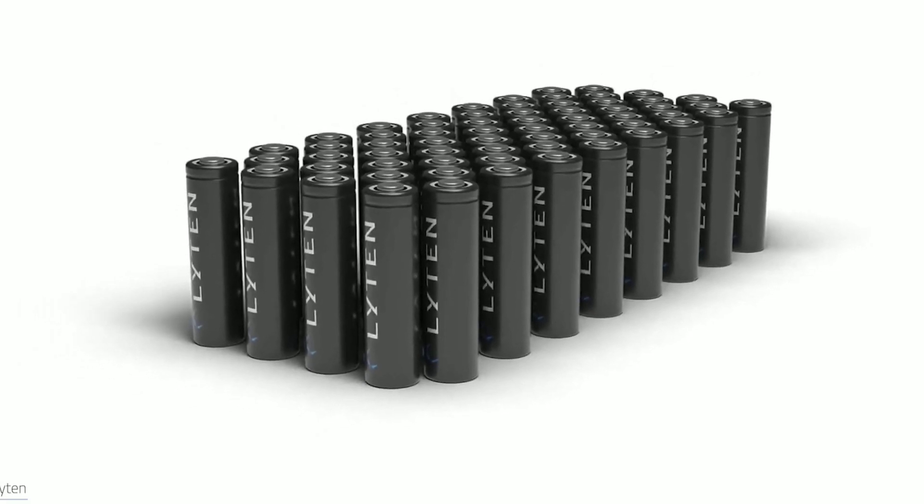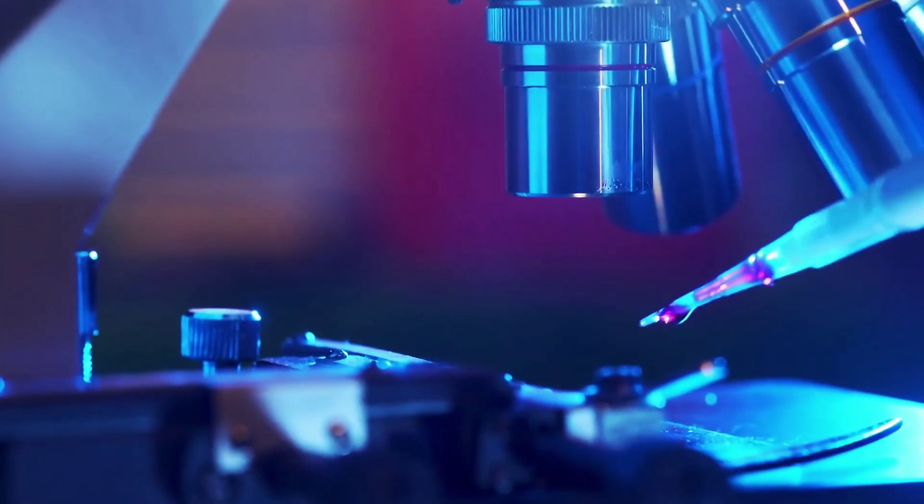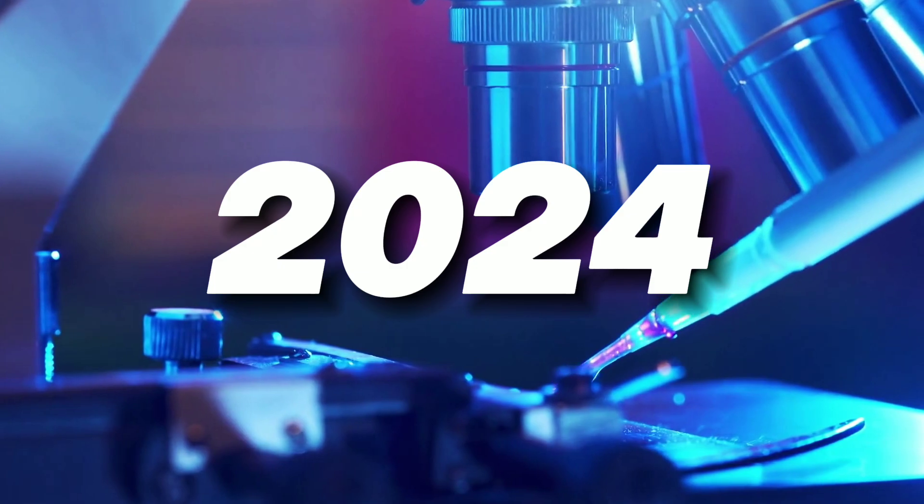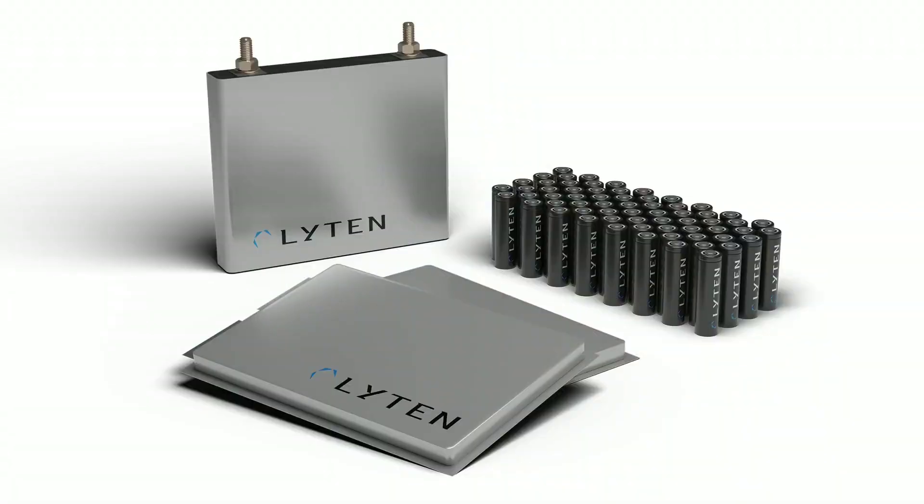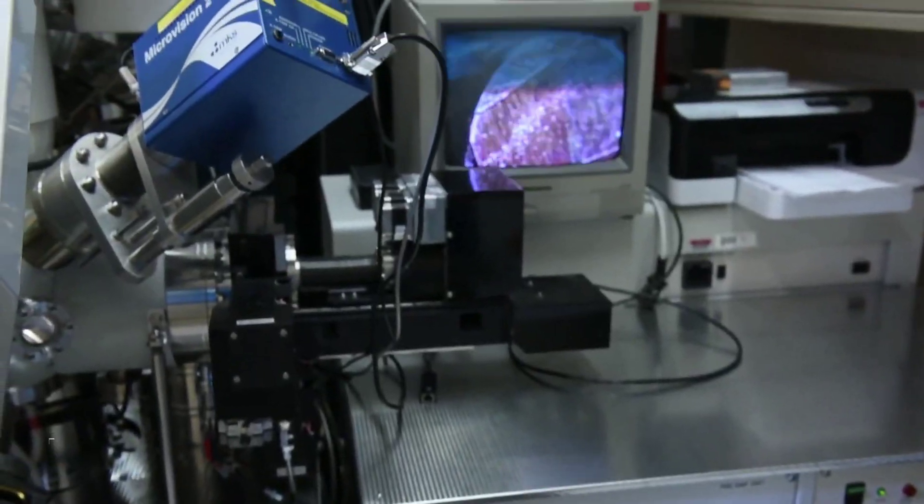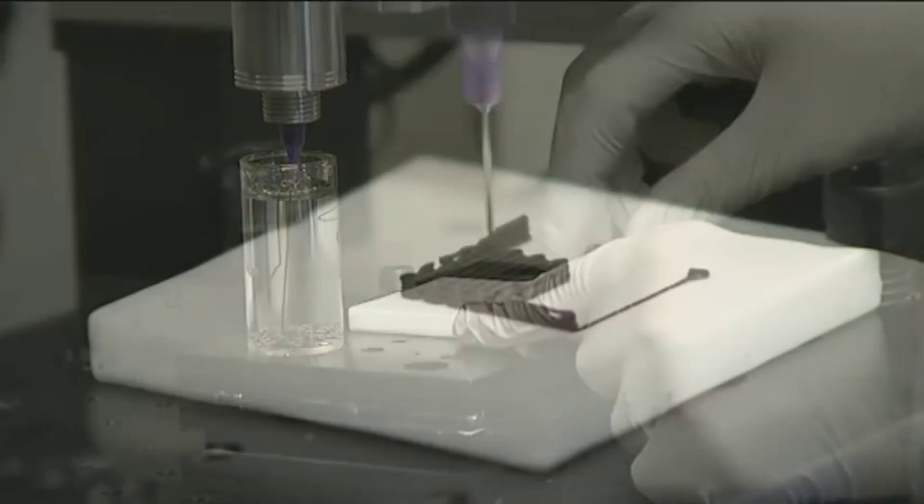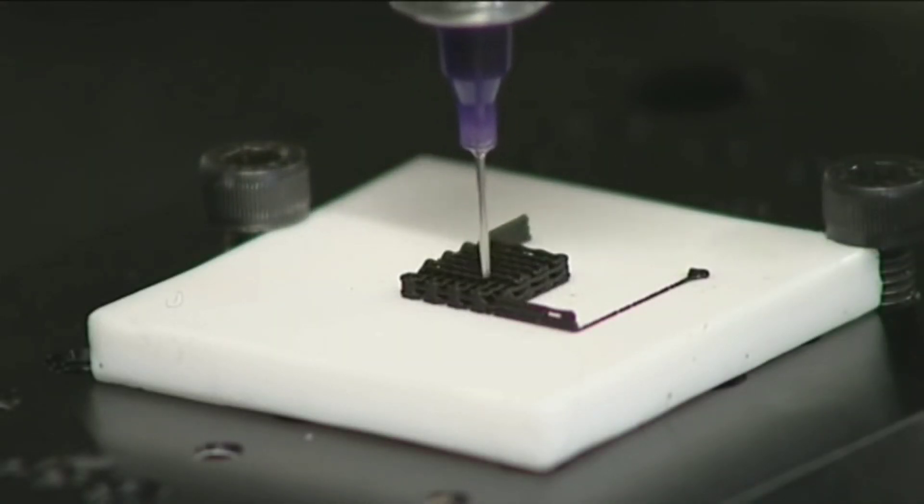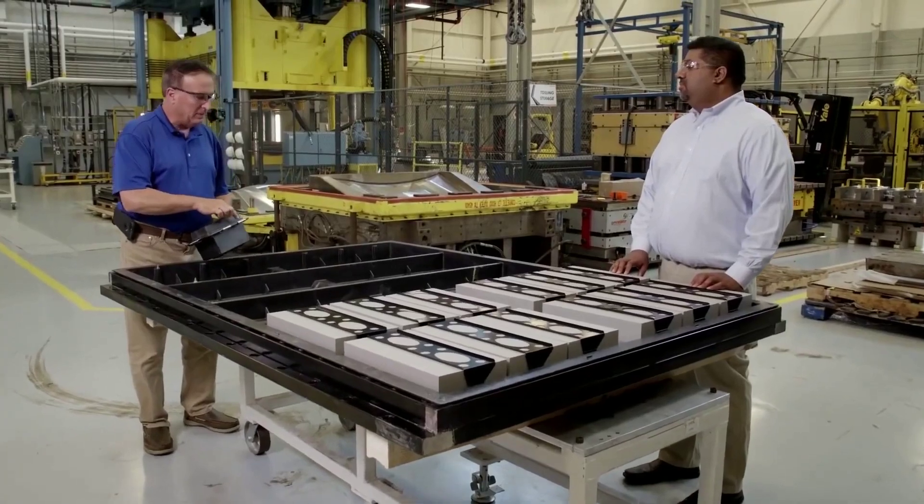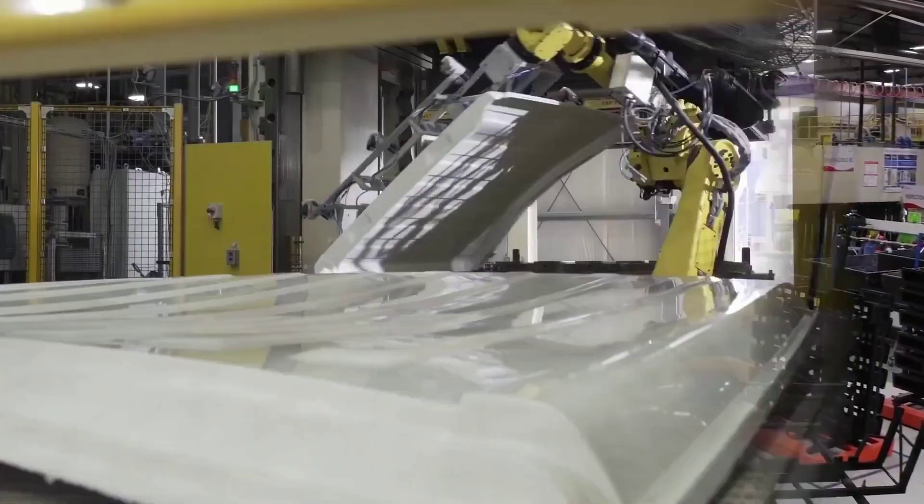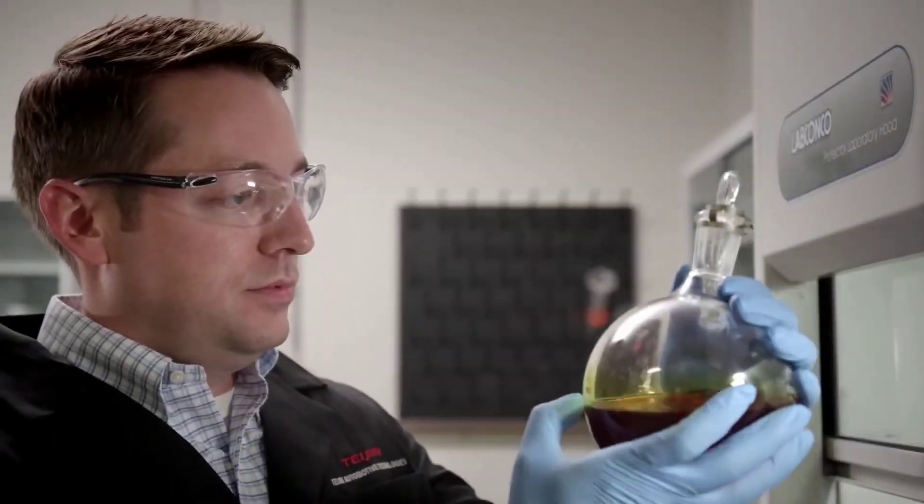A breakthrough battery technology that could change the EV industry forever in 2024. I'm talking about Leighton's lithium-sulfur battery, which is based on a revolutionary material called 3D graphene. In this video, I will explain what 3D graphene is, how it works, and why it is so much better than the current lithium-ion batteries that power most EVs today. So stay tuned and don't forget to like, share, and subscribe for more awesome content.